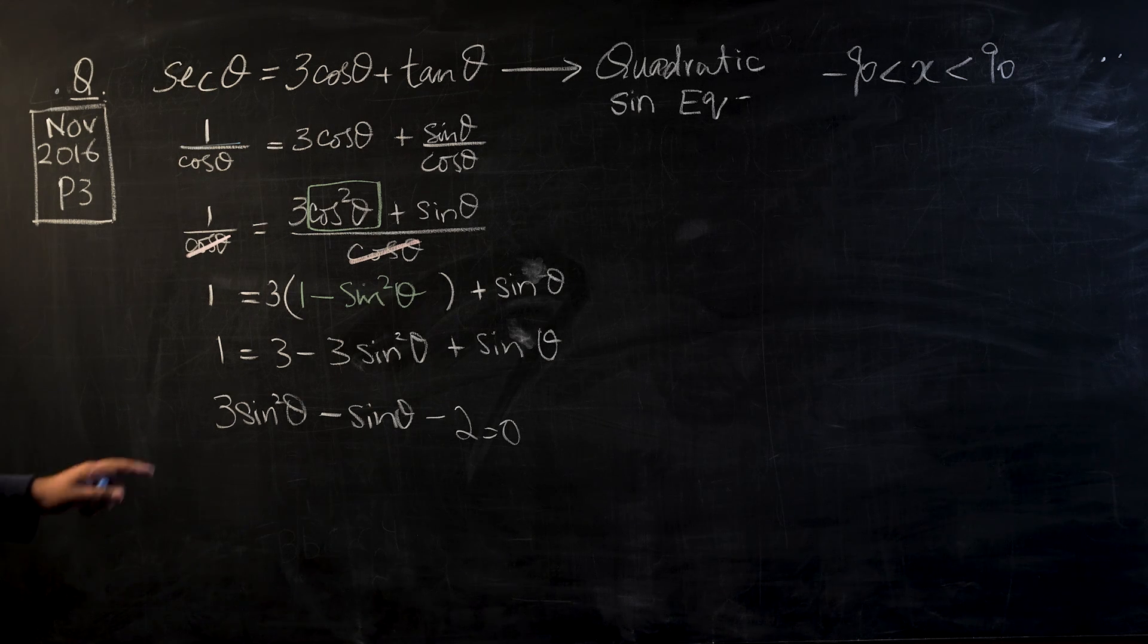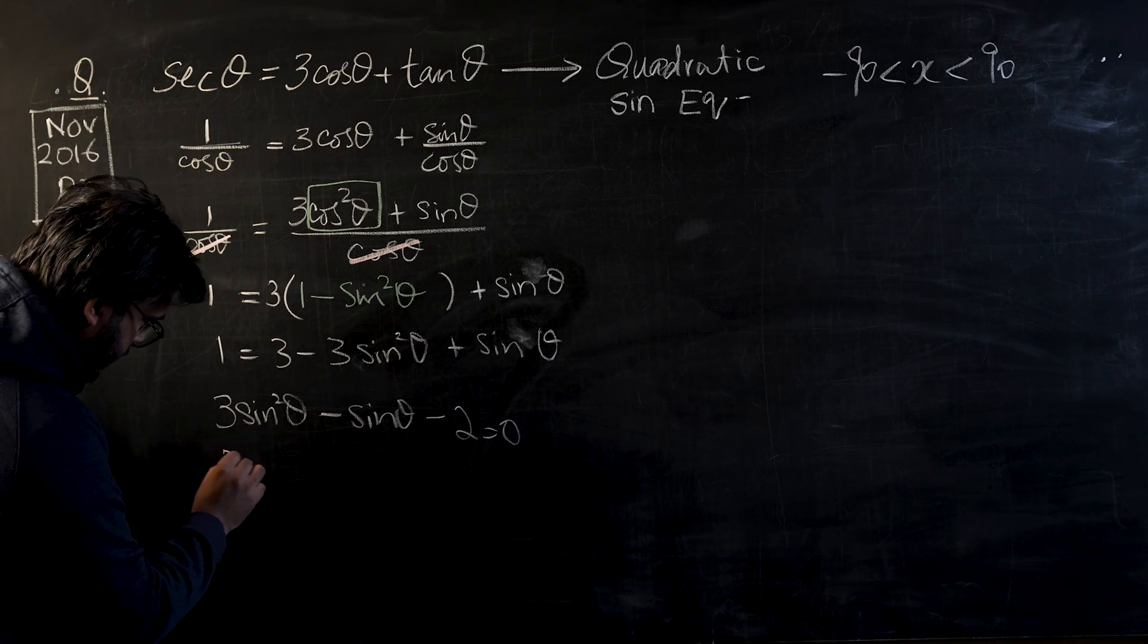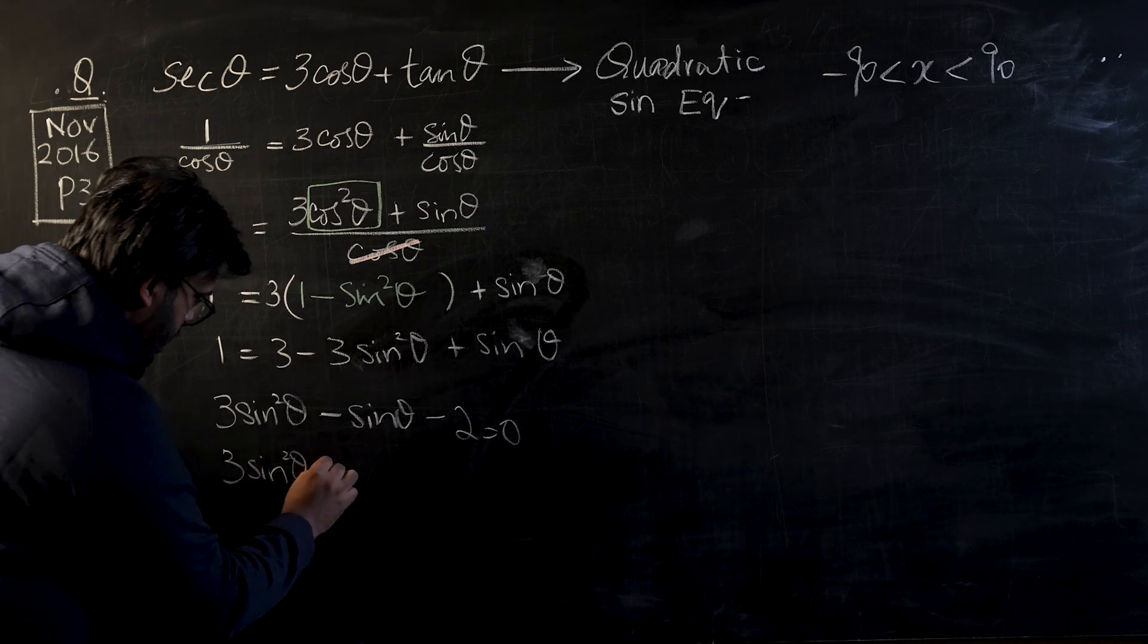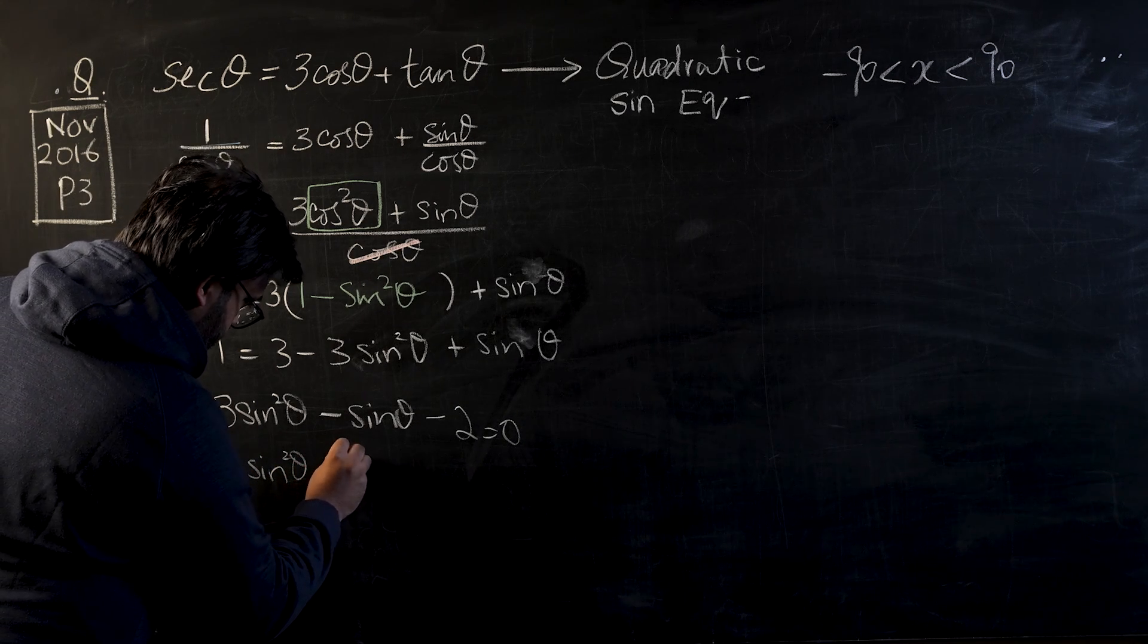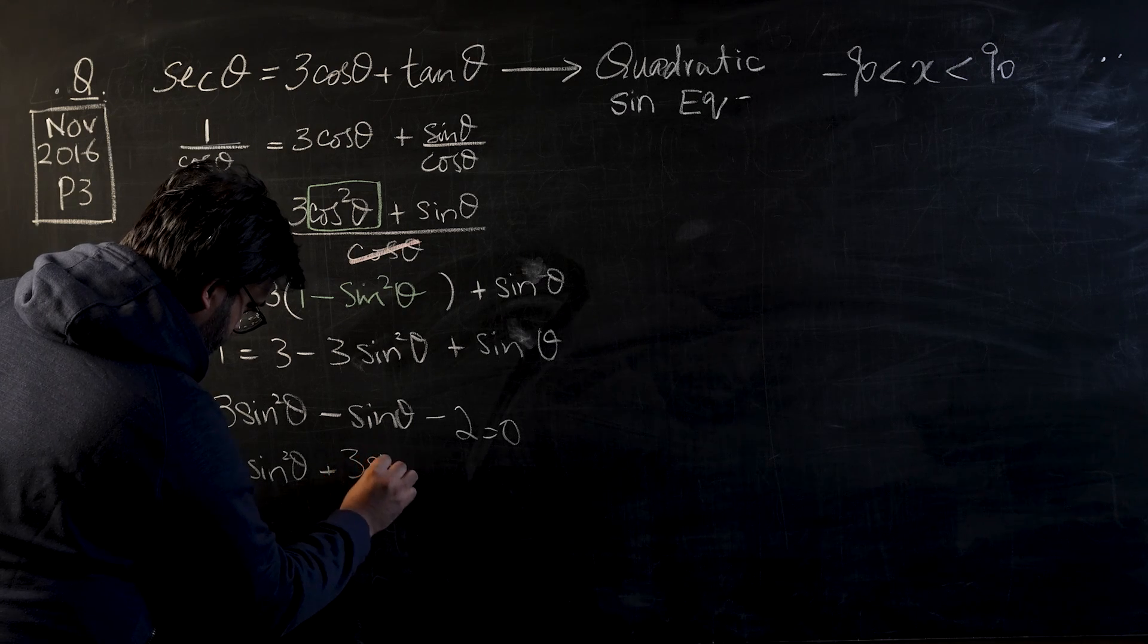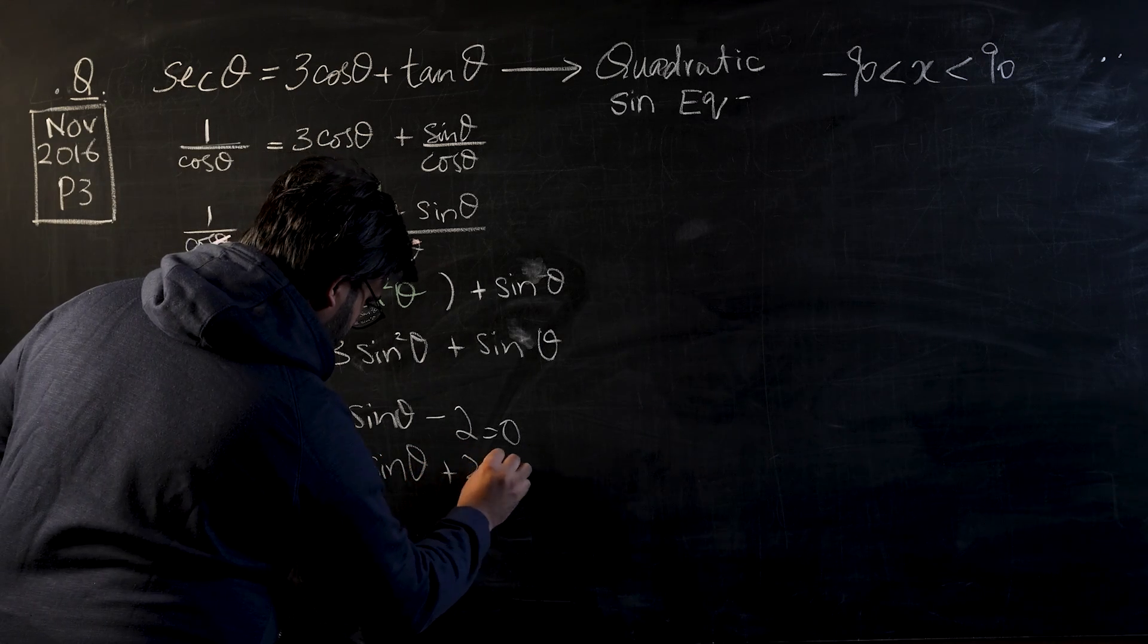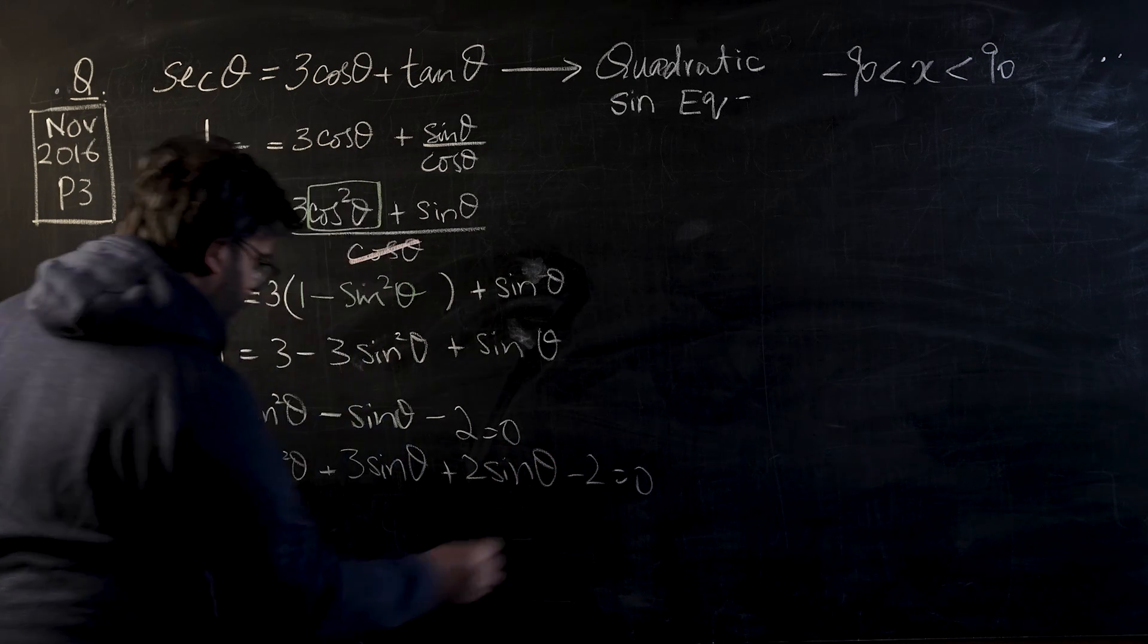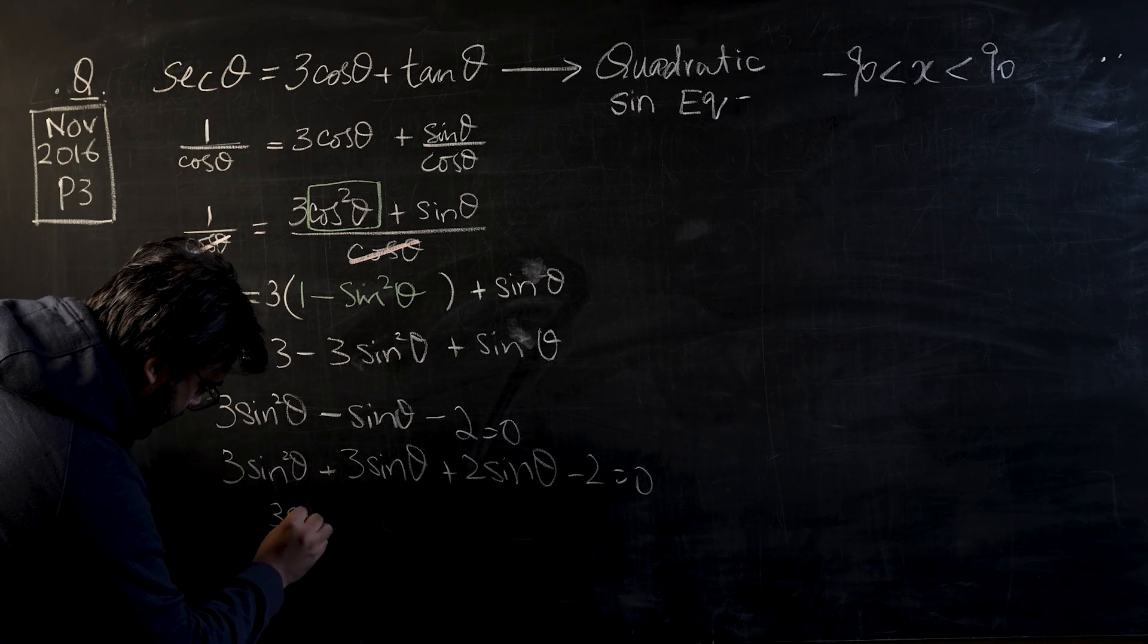And now let's try to solve this. I think we can factorize this. Let's give it a try. So this will be 3 sin² θ plus minus 3 sin θ, plus 2 sin θ minus 2 equals zero.